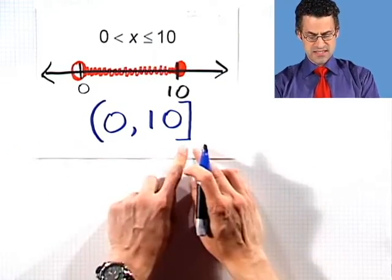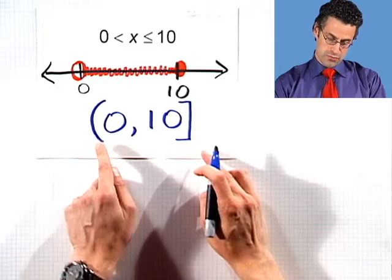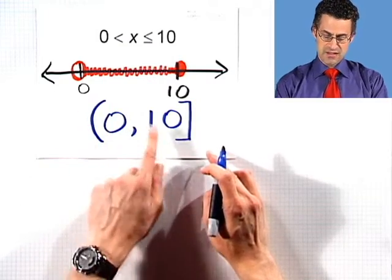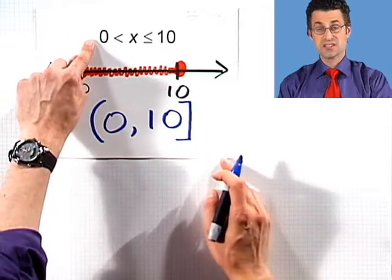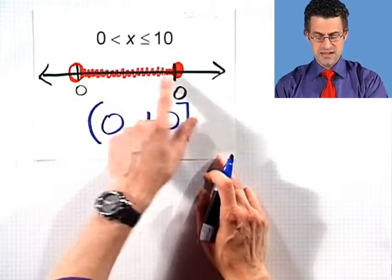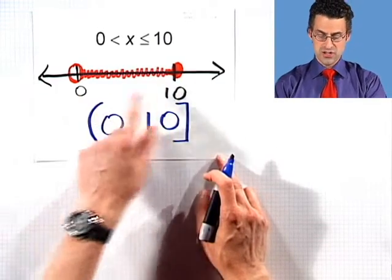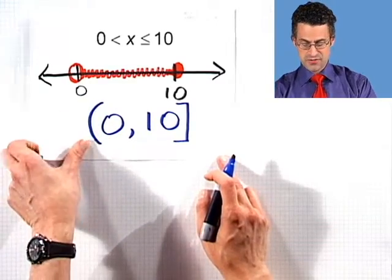So in fact, this is the interval notation, open round parenthesis, 0, 10, closed square parenthesis. That represents this collection of numbers, the interval between 0 and 10 where I include 10 but I do not include 0. So that is interval notation.